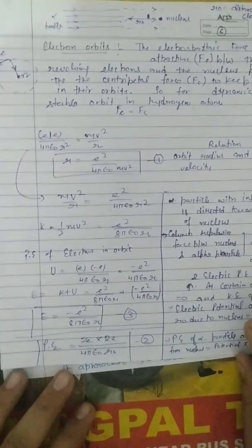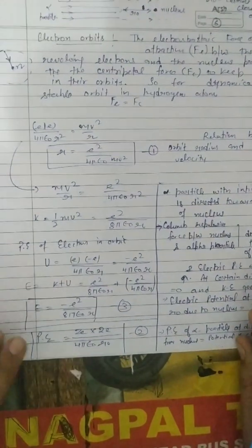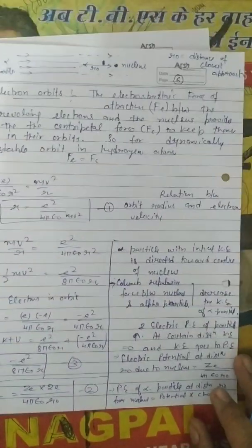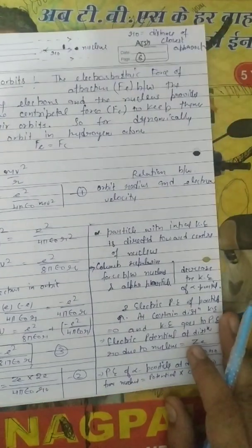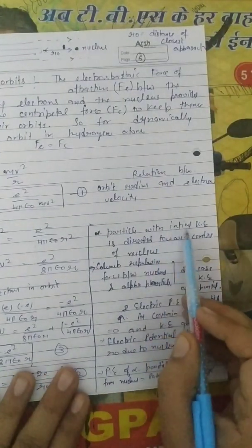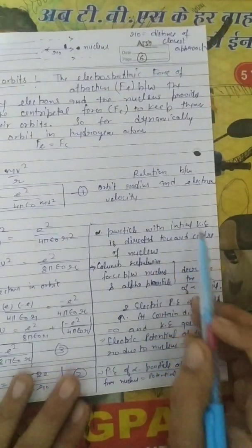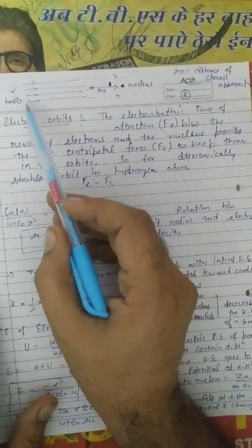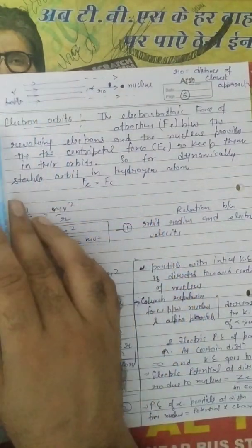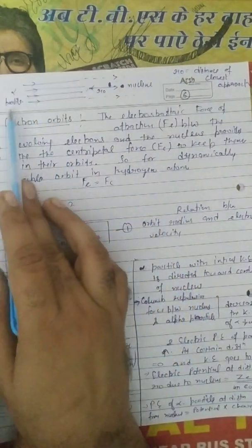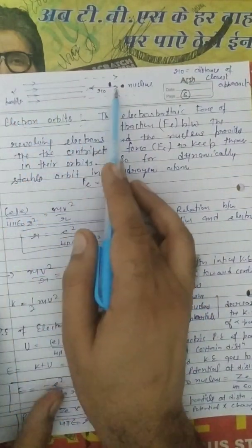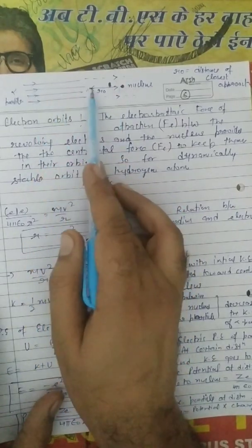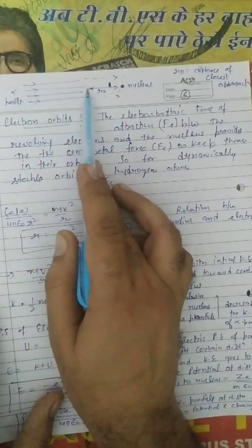Before going to the total energy, we have to consider a case in which an alpha particle moves with an initial kinetic energy. So the alpha particle starts with a kinetic energy directed toward the center nucleus — this is the nucleus at the center, which is along the central line.